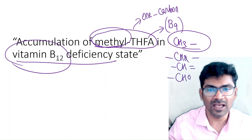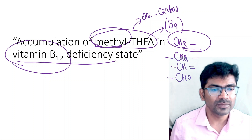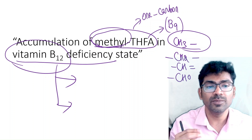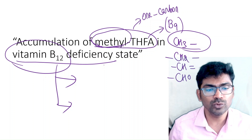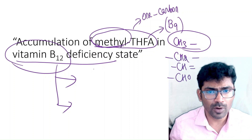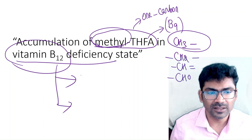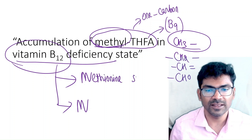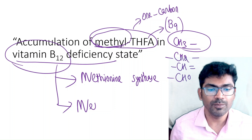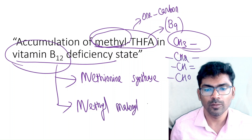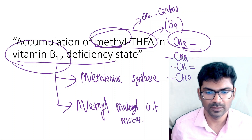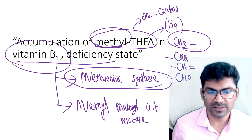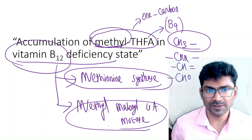First, recall the two enzymes that require vitamin B12. In the human body, only two enzymes need vitamin B12. Their names begin with 'M': methionine synthase and methyl malonyl-CoA mutase. The enzyme involved in folate trap is methionine synthase.